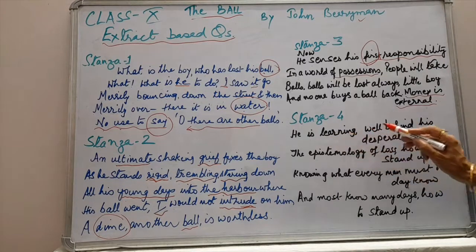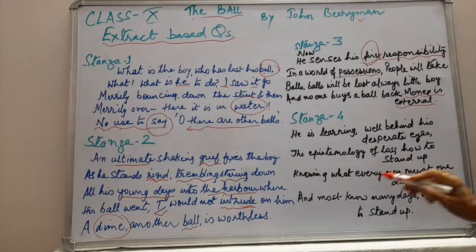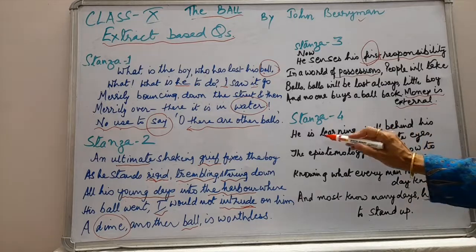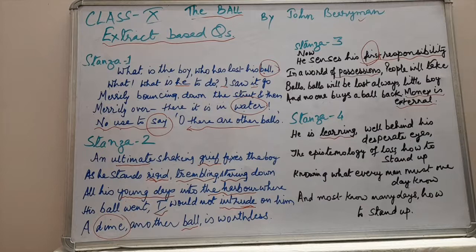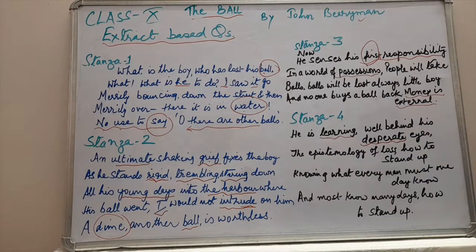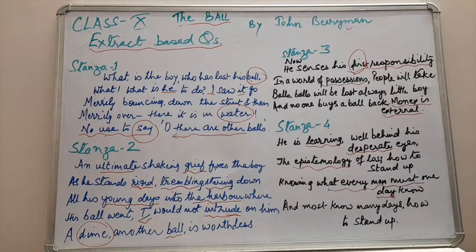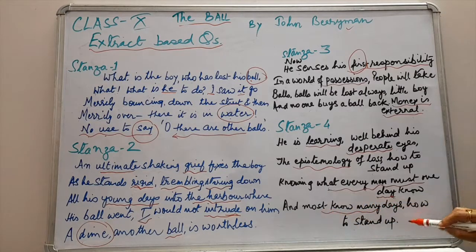Stanza 4: 'He is learning well behind his desperate eyes the epistemology of loss, how to stand up, knowing what every man must one day know, and most know many days, how to stand up.' What is the child learning from this bitter experience? The child has learned to cope up with the loss. Why are the boy's eyes desperate? Because he is sad as he has lost his ball. What does 'epistemology' mean? Epistemology means the nature of loss. What does every man need to know? That he might face loss and needs to learn to cope up with it.